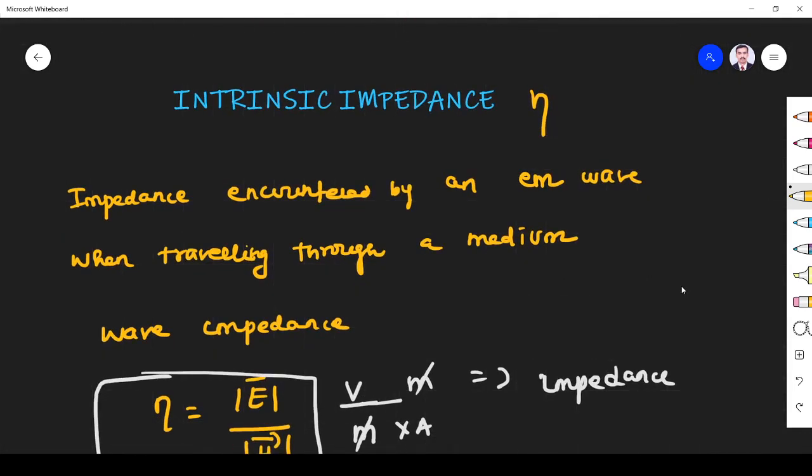Simply, it is the impedance encountered by the electromagnetic wave when it is traveling through a medium. I hope you understand the meaning of intrinsic impedance. If you have any doubt, please ask me in the comment section. Thank you.